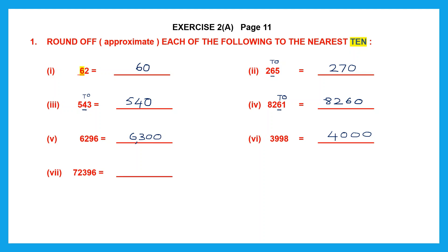Question 7: the digit in the tens place is 9 and the digit to its right is more than 5. That means the tens place should go to the next digit — we need to add 1. So 9 plus 1 is 10, carry 1. 3 plus 1 is 4 and then 2, 7. So we have 7,240. The 6 will be replaced with a 0. Our answer is 72,400.